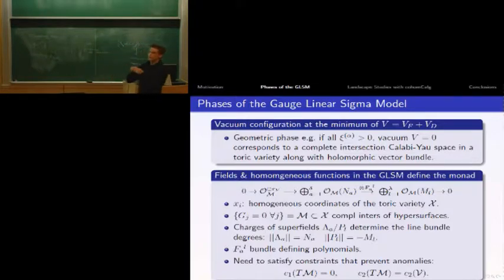How can we map the fields in our gauge linear sigma model with the toric data in the monad? The bosonic components of the fields x are the homogeneous coordinates of our toric variety. The homogeneous functions in the superpotential are forced to be zero and play the role of intersections in our toric variety.